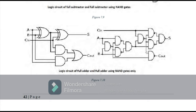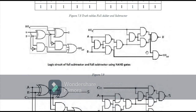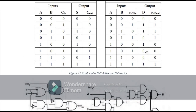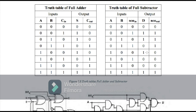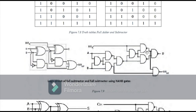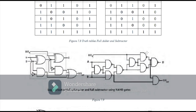Now I have to implement the full adder gate on Proteus. First we also look at the full subtractor circuit. Here is the truth table of the full subtractor: inputs A, B, and borrow-in, and 2 outputs: difference and borrow-out. By using that truth table I have made the circuit of the full subtractor using 2 XOR gates, 2 AND gates, and 1 OR gate, and I have also converted all these gates into NAND gates.